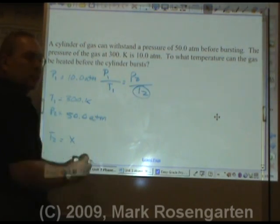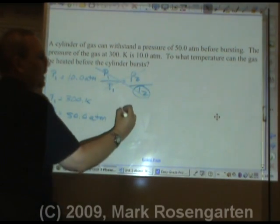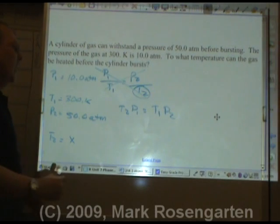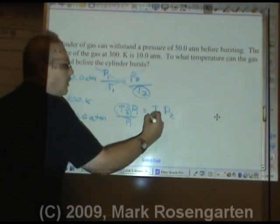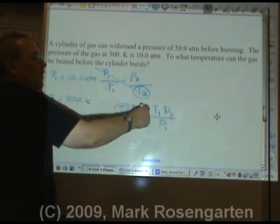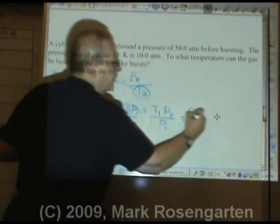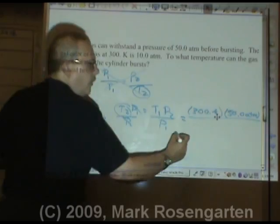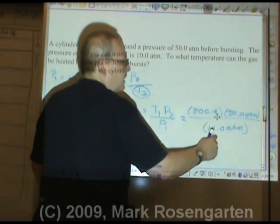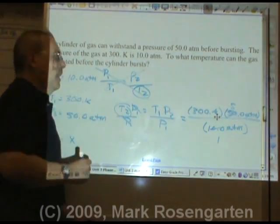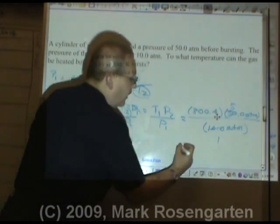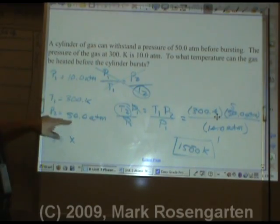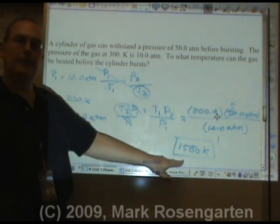We're trying to solve for temperature, which is in the denominator. Get it out of the denominator by cross multiplying: T2 P1 equals T1 P2. Now to get T2 by itself, divide both sides by P1 — that way the units for pressure will cancel and leave you with the units for temperature. T1 is 300 kelvin, P2 is 50.0 atm over P1, which is 10.0 atm. Atmospheres cancel. 50 and 10 simplifies to 5 over 1. 300 times 5 is 1500 kelvin — 3 sig figs. If you make the pressure 5 times greater, you need the temperature to be 5 times greater. Direct relationship.